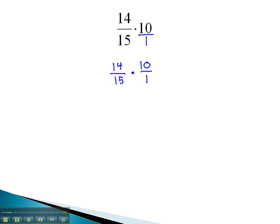We can now do some reducing, noticing the 15 and 10 have a common factor of 5. 15 divided by 5 is 3, and 10 divided by 5 is 2, and we're ready to multiply what's left together. Multiplication works across the numerator and denominator. 14 times 2 is 28, over 3 times 1 is 3, and we get our final solution, 28 thirds.